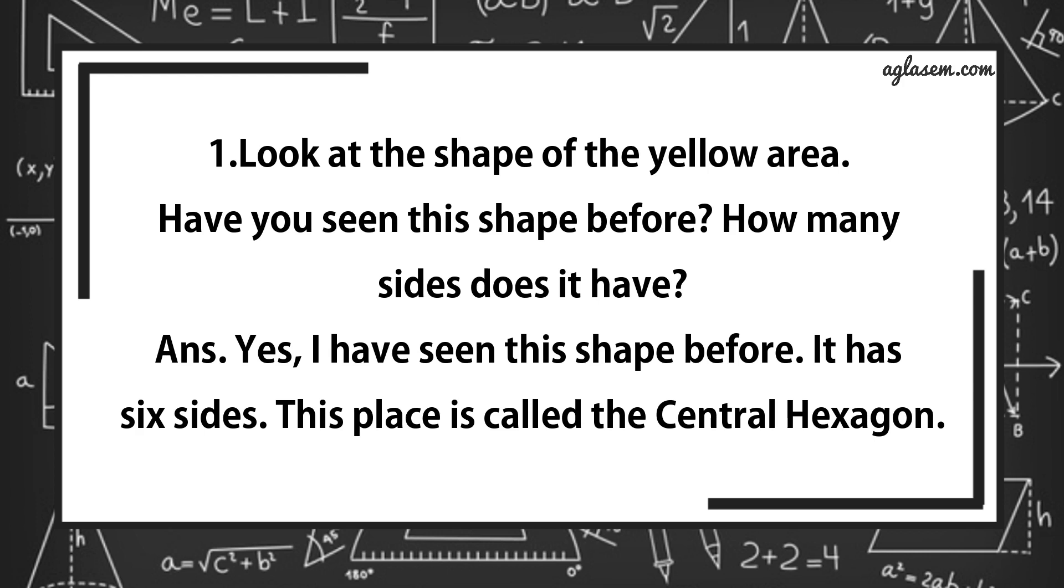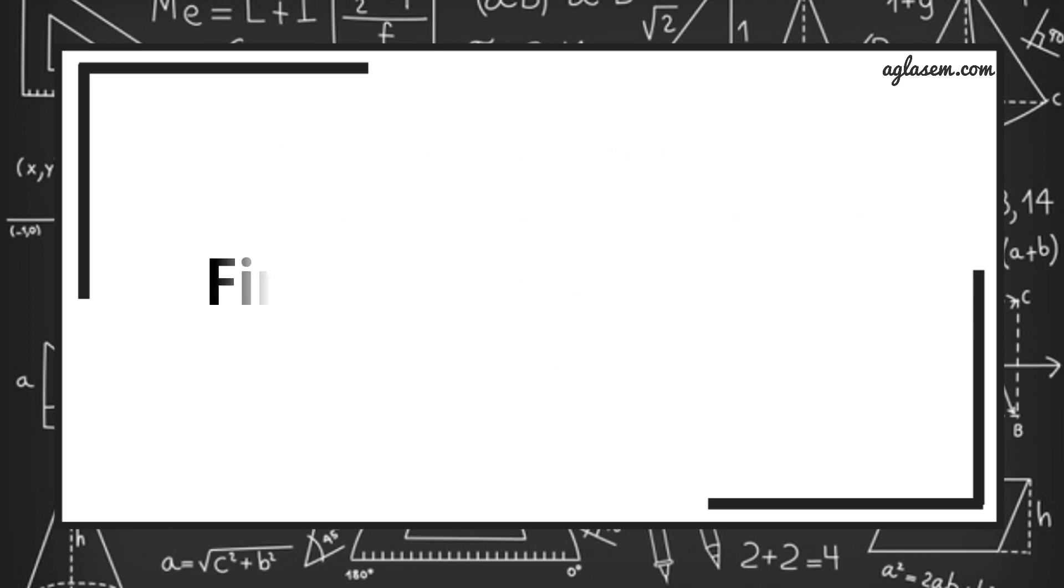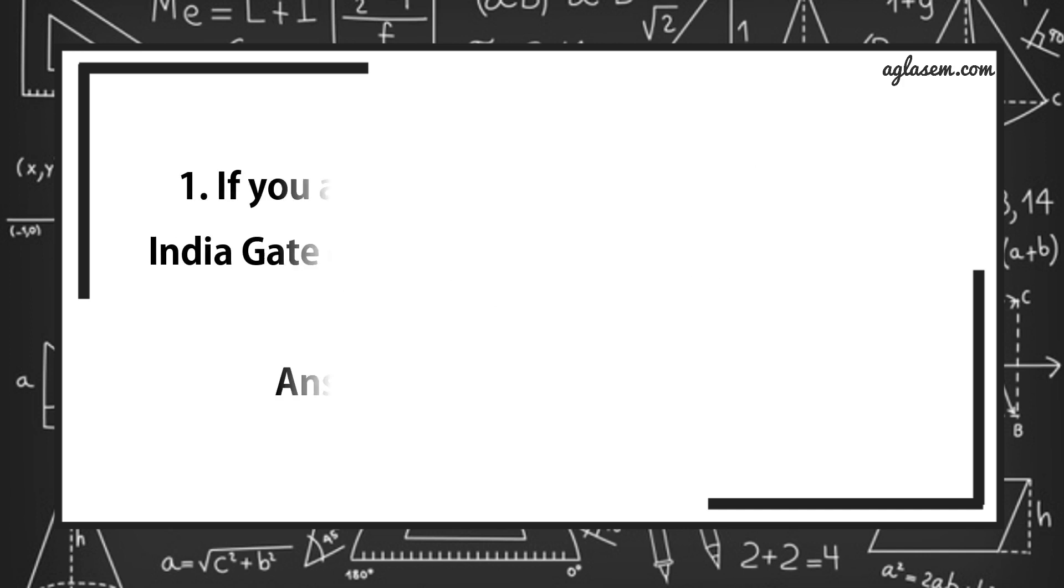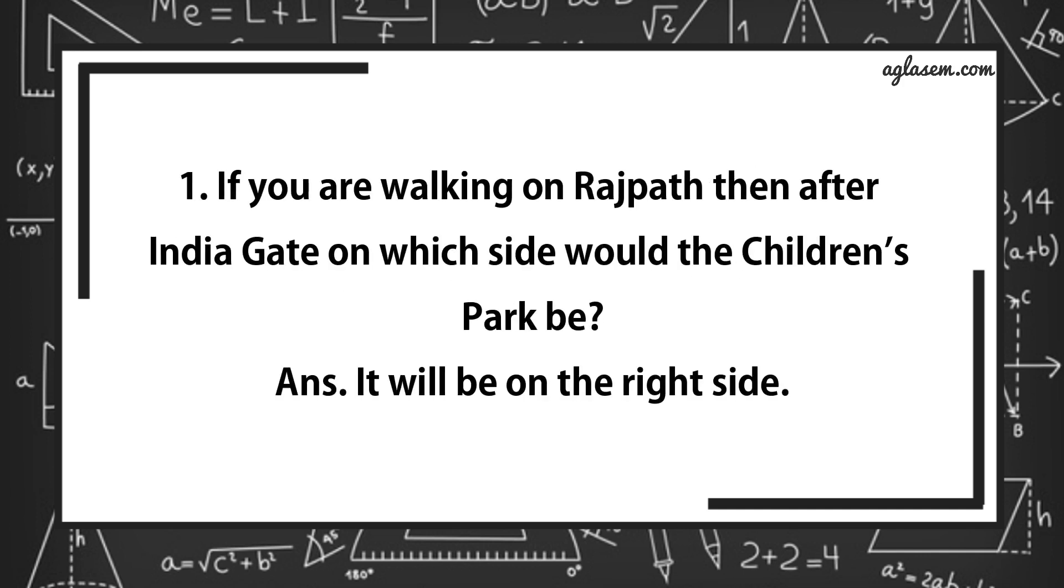This place is called the central hexagon. Further, find out from the map. Question number 1 says, if we are walking on Rajpath, then after India Gate on which side would the children park be? Answer is, it will be on right side.